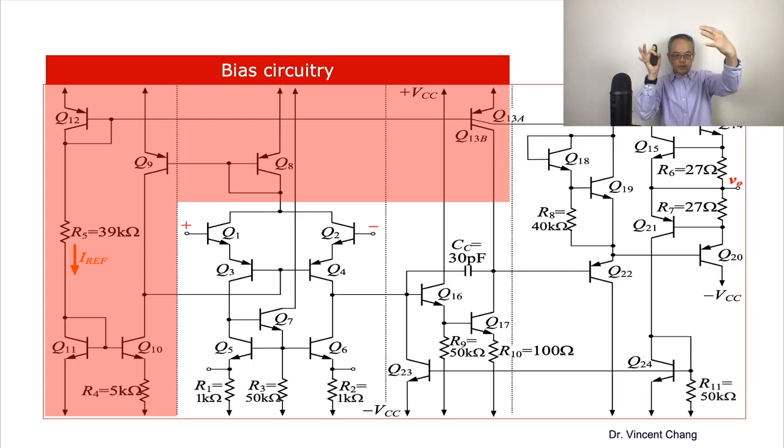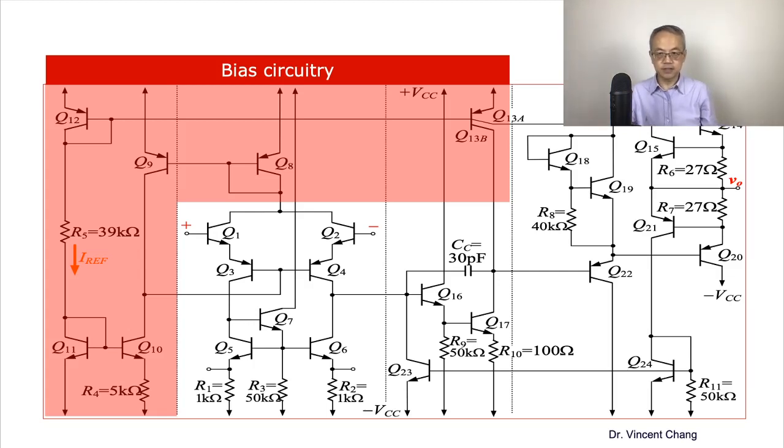Bias on the left. The red, the circuit within the red zone is the bias circuit. See the corner. The corner one is the Widlar. So can you recognize this? It's the Widlar current mirror.